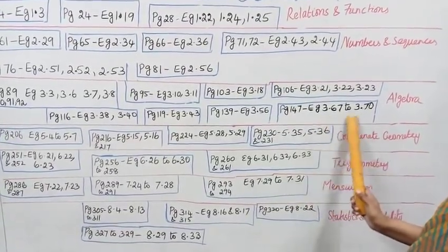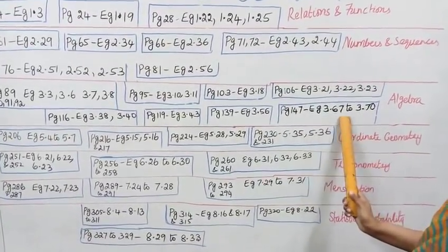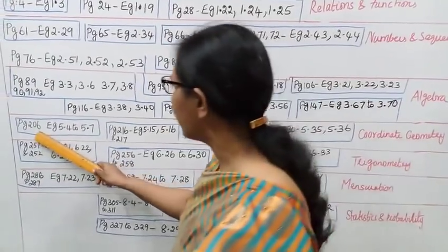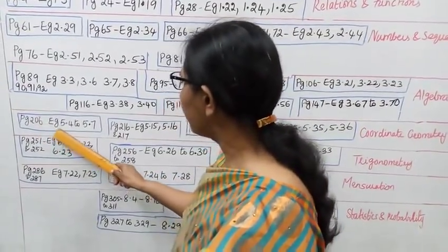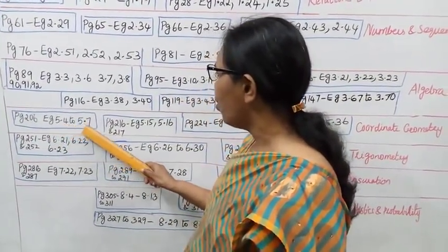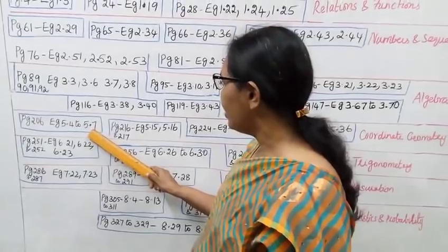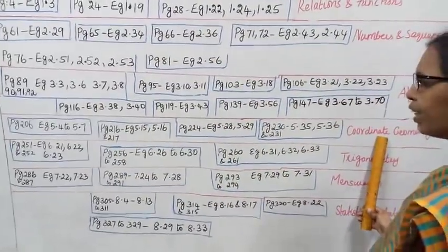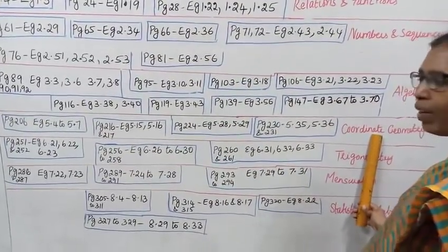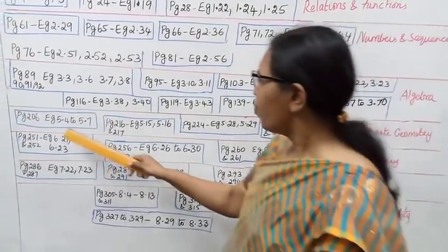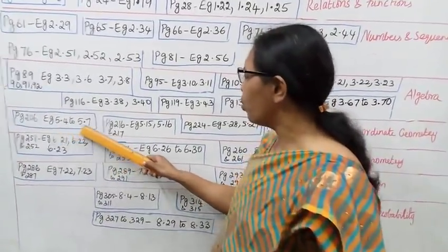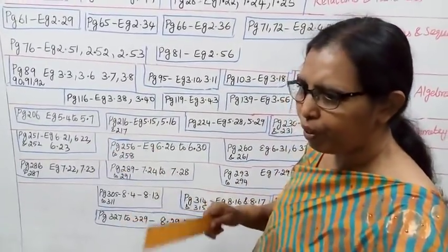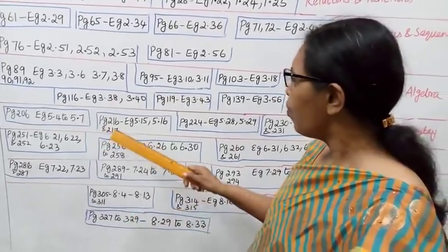These are very important sums. Page 206, example 5.42 and 5.7. This chapter is Coordinate Geometry. In Coordinate Geometry: examples 5.42, 5.7, 5.4, 5.5, 5.6, 5.7.